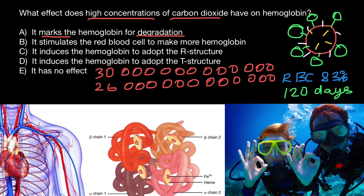Now let's discuss the R state and T state of hemoglobin. Many students confuse these two states because they're easy to memorize and easy to forget. I want to offer a mnemonic technique so you'll remember them for the rest of your life. When oxygen molecules bind to the heme group — specifically to the iron — hemoglobin goes into the R state, or relaxed state, because such binding changes the conformation of each subunit. When oxygen is lost, we call that the T state, or tense state.